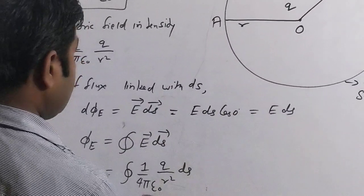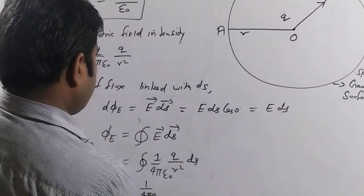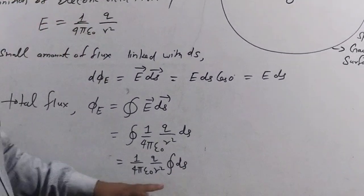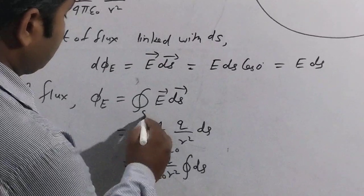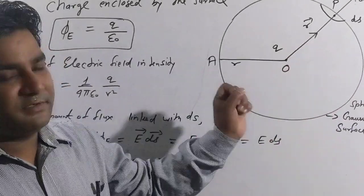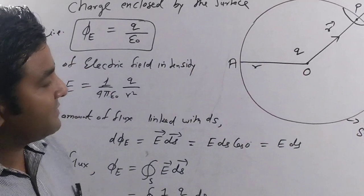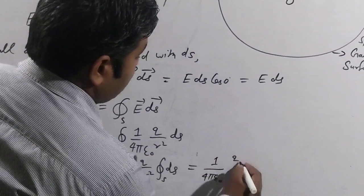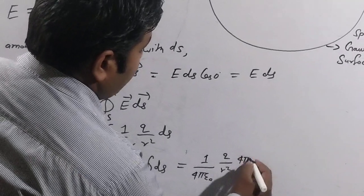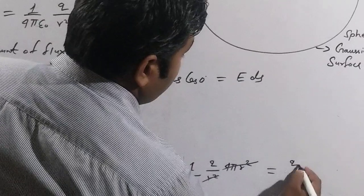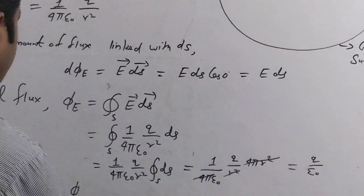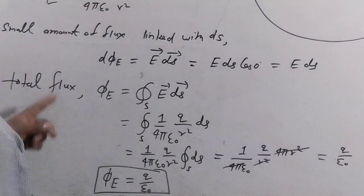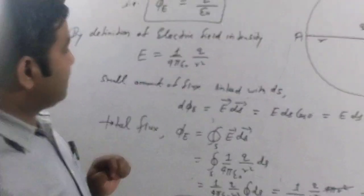So φₑ = (1/4πε₀)(q/r²) integrated over the closed surface as ∮dS. The total surface area of a sphere equals 4πr², so substituting: φₑ = (1/4πε₀)(q/r²) × 4πr². The 4π and r² cancel out, giving φₑ = q/ε₀. Hence the total electric flux φₑ = q/ε₀.